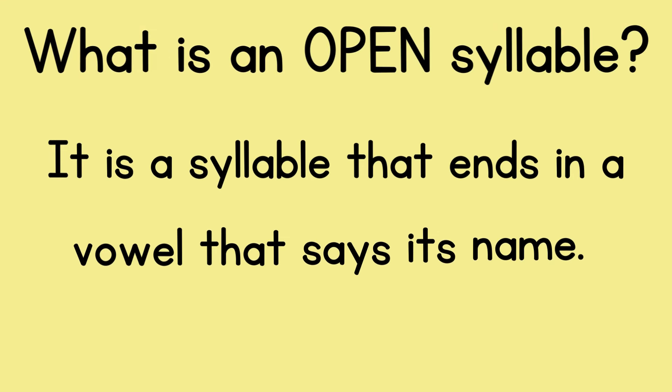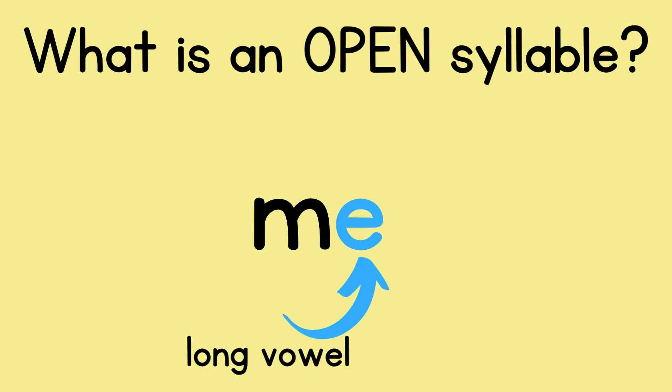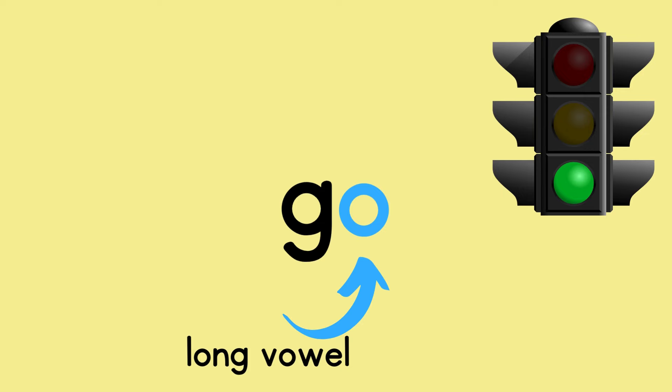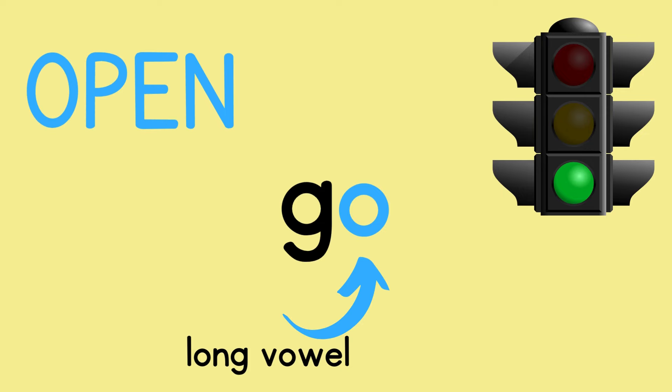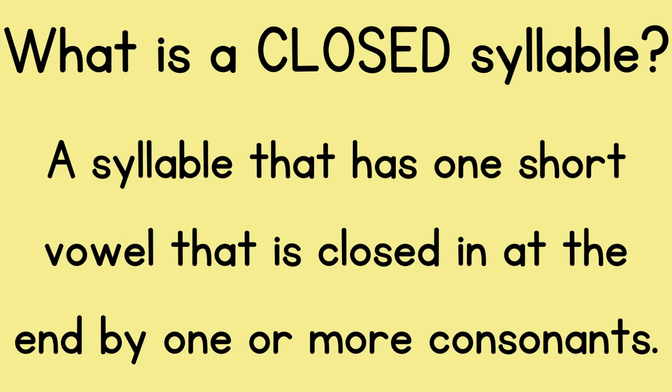Let's first look at open syllables. An open syllable is a syllable that ends in a vowel that says its name, or its long sound. Look at 'me' — it ends in a vowel, and the E is not saying a short sound; it's saying its long sound E. So this is what we call an open syllable. 'Go' also ends in a vowel, and the vowel says its name, the long sound O. So that is an open syllable.